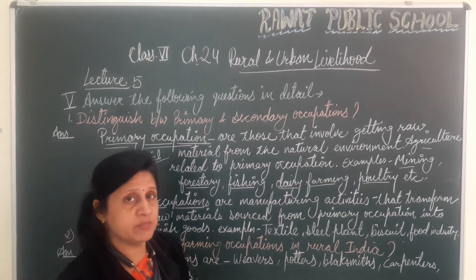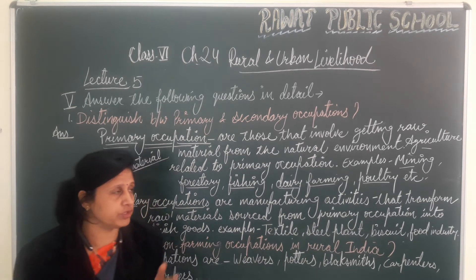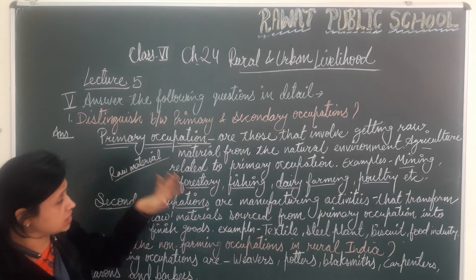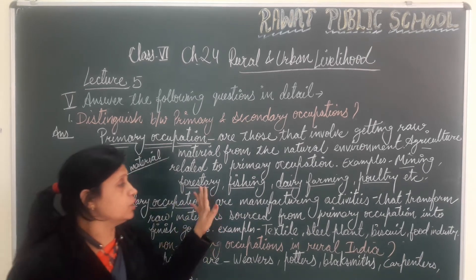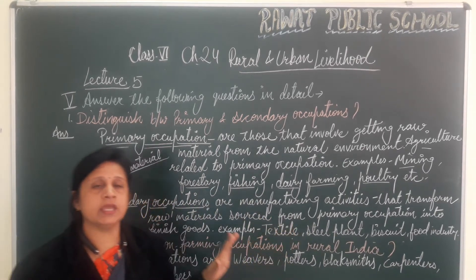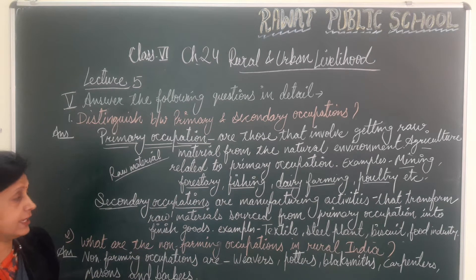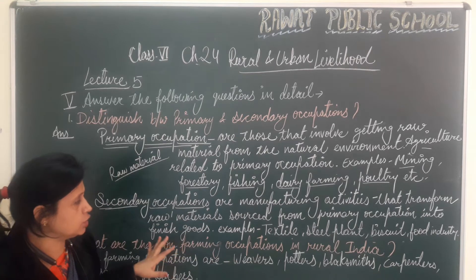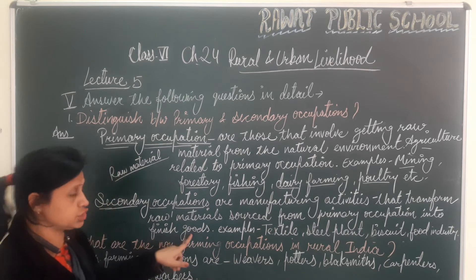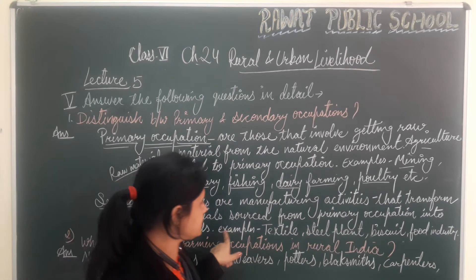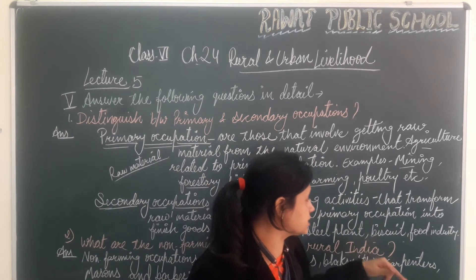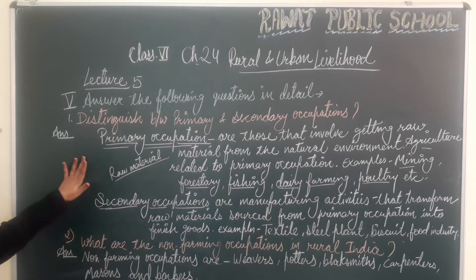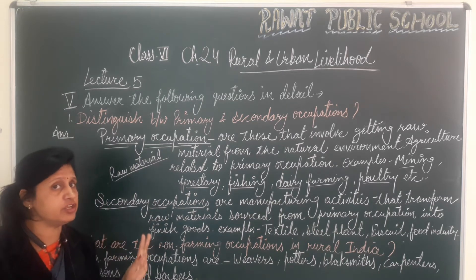For example, take biscuits and wheat. Wheat is grown by the farmer — the farmer produces the raw material — and it is used by industries to make many products. For example, biscuits and bread are made from wheat as finished goods. Examples of secondary industries include textile, steel, and food industry. These are the primary and secondary occupations.